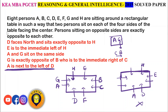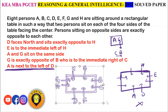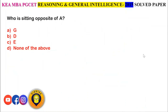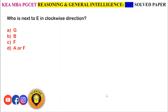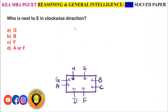Looking at the questions: Who is sitting opposite A? The person opposite A is C — but since C is not in the options, the answer is option D: None of the above. Who is next to E in clockwise direction? Going clockwise from E, the next person is B — option B.